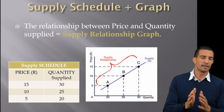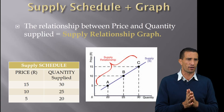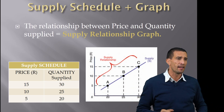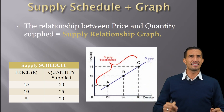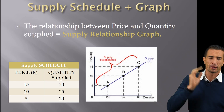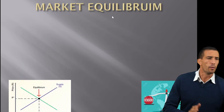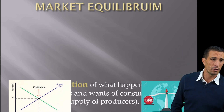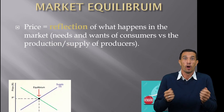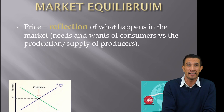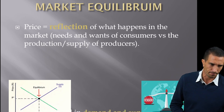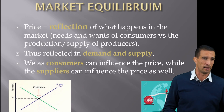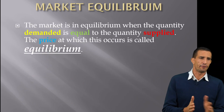In the supply schedule and graph, at a price of 15 Rand I want to supply 30 units, but at 5 Rand I'll only supply 20 units — the direct relationship. You can see demand and supply form two different graphs, and where they intersect we get market equilibrium. This is the reflection of what happens in the market, where consumers agree on a price they want to buy at and suppliers are willing to sell at that price.